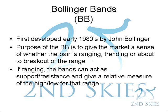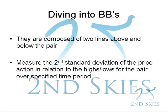If we're in a ranging environment, then the bands can act as support and resistance and give us a relative measure of the highs and lows for that particular range. The Bollinger Bands are composed of two lines, one above and one below the pair's price action. They measure two standard deviations of the price action over any time period, whether it's a 30-minute chart, one-hour chart, or a daily chart.